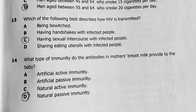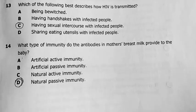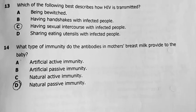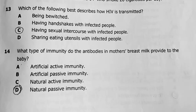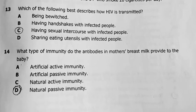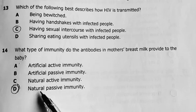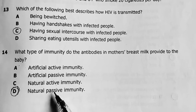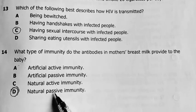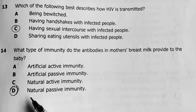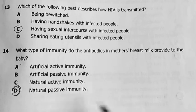Number 14. What type of immunity do antibodies in mother's breast milk provide? Check, it's natural. The baby is not involved in the development of this immunity. So the baby is passive. So natural passive is the type of immunity.